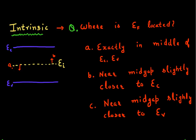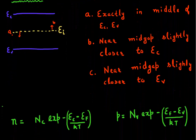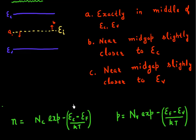Let's start with something we derived in the last video — the formula for the number of electrons and holes. The number of electrons depends upon the effective density of states in the conduction band, Nc, and how far the Fermi level Ei is from the conduction band.